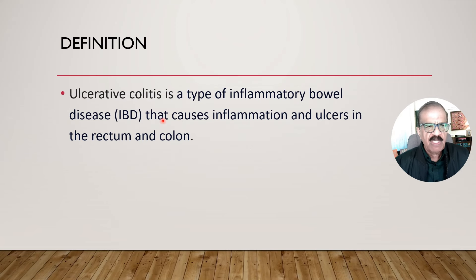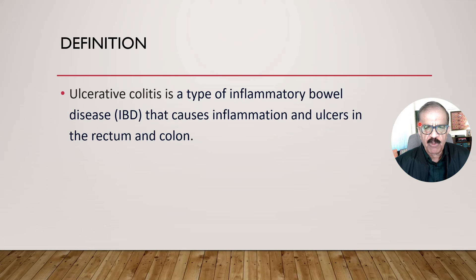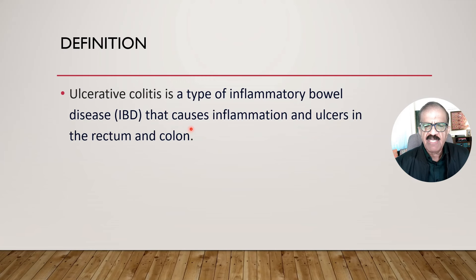By definition, ulcerative colitis is a type of inflammatory bowel disease that causes inflammation and ulcers in the rectum and colon. This part is important: unlike Crohn's disease, which can affect any part of the gut, ulcerative colitis precisely affects the large intestine. Inflammation usually starts from the rectum and can affect any portion of the colon, moving upward from there.